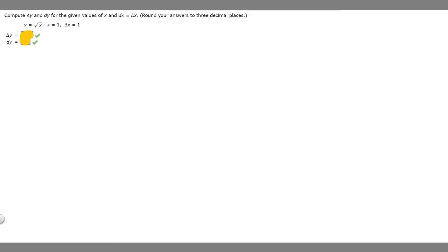So in this problem we're told to compute delta y and dy for the given values of x. dx is equal to delta x, and it says to round your answers to three decimal places. We're told that y is equal to the square root of x, x equals 1, delta x equals 1. So what we're trying to find is delta y and dy.